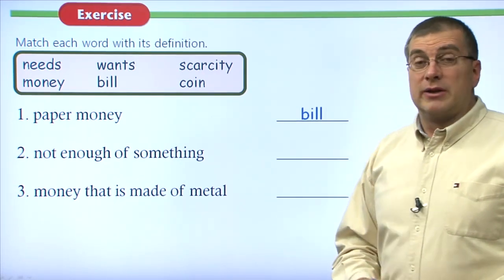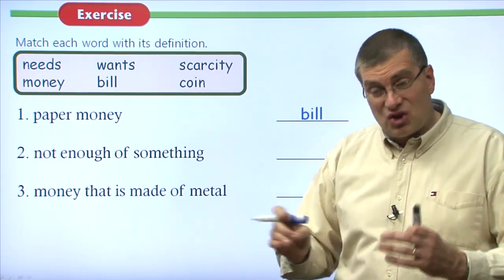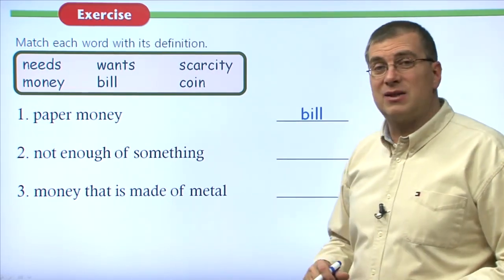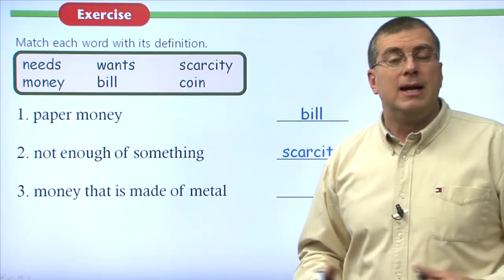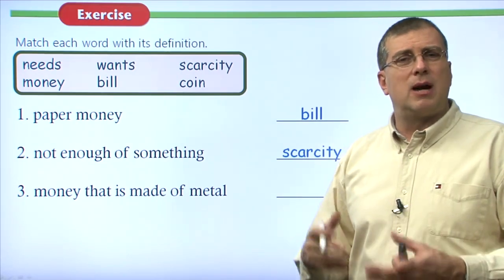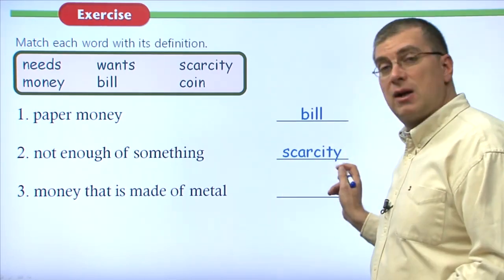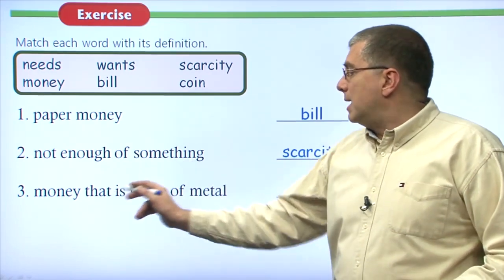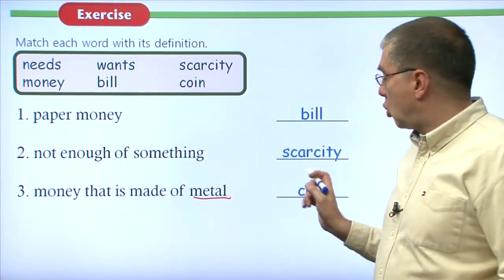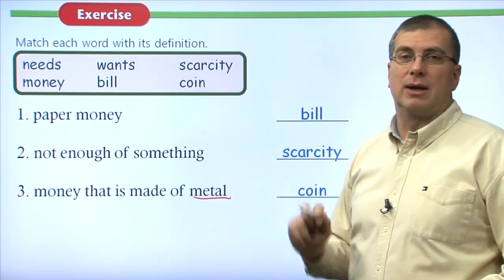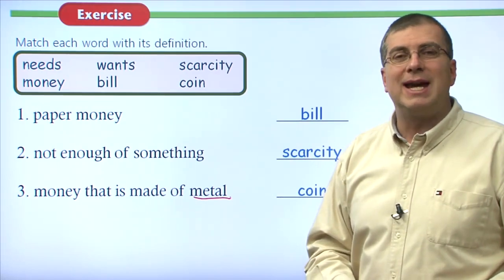Number two: not enough of something. For example, six people want to eat dinner but there's only one small tomato — there is a scarcity. A scarcity of food, a scarcity of water, a scarcity of land. These are problems as more and more people compete for limited resources. Number three: money that is made of metal, not paper — not a bill, but a coin. We talked about penny, nickel, dime, and quarter — very common types of coins in American currency.